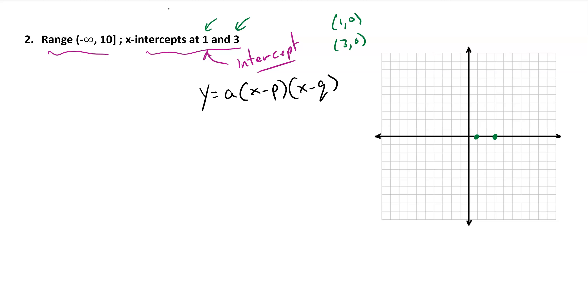So I can take those two values and plug them into the intercept form: y equals a times (x minus 1) times (x minus 3). That gives me almost what I need, except I need to find the a value.